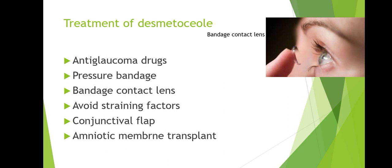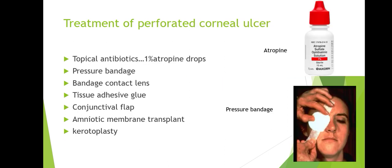Treatment of descemetocele: whenever there is damage to the epithelium or stroma, or both are no longer present, the Descemet's membrane is exposed and bulges out — that is called a descemetocele. To treat it: anti-glaucoma drugs, pressure bandage, bandage contact lens, avoid straining factors such as sneezing and coughing.